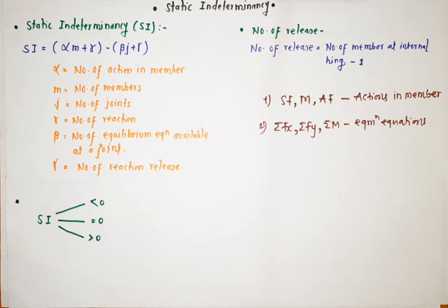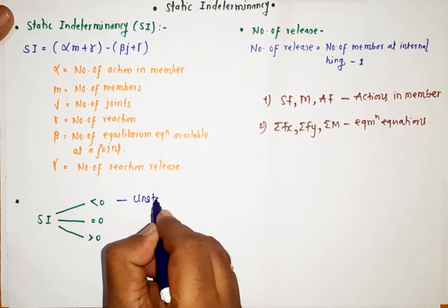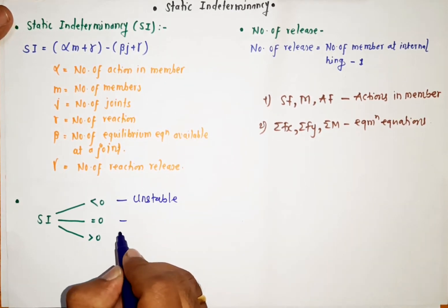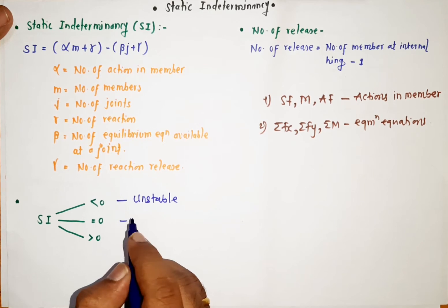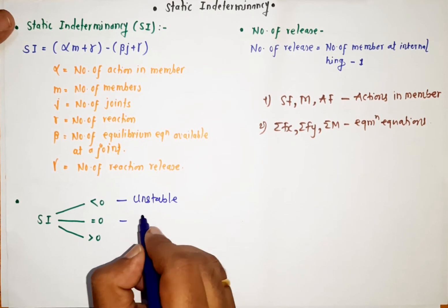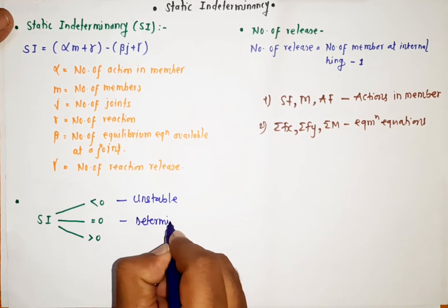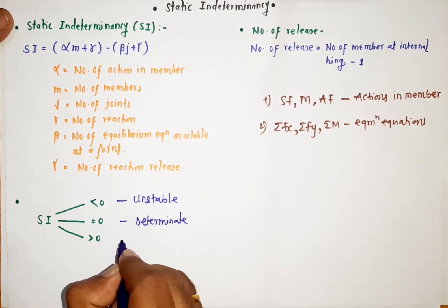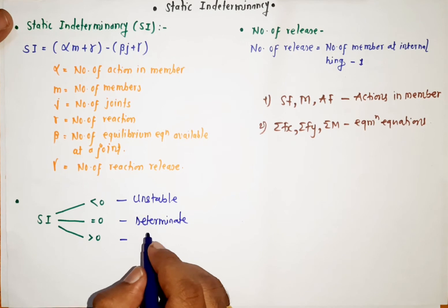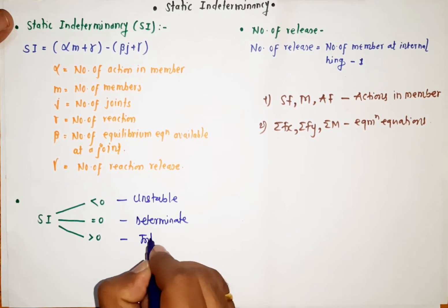When static indeterminacy is less than zero, the structure is unstable. When static indeterminacy is equal to zero, it is a determinate structure. When static indeterminacy is greater than zero, it is called an indeterminate structure.